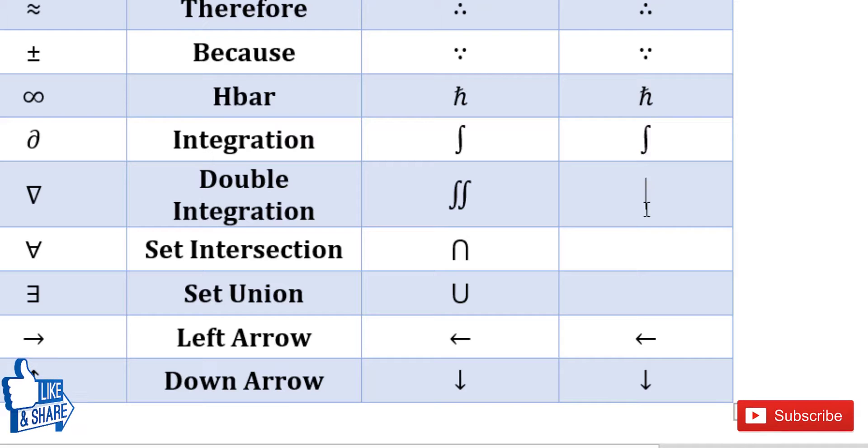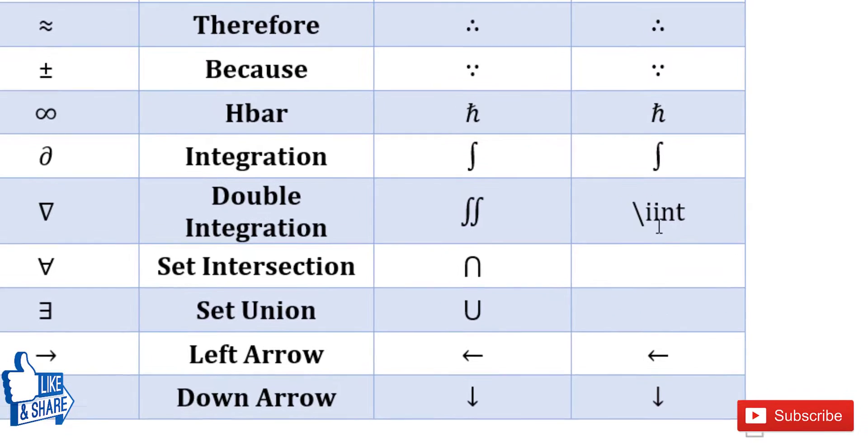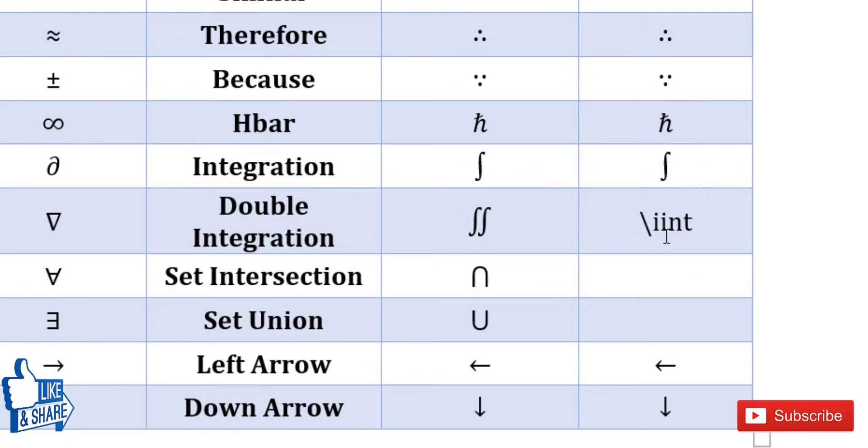So this is for single integration. For double integration, it is like iint. The number of i's stands for the number of integrations. Like for single integration, it is just one i. For double integration, iint. For triple integration also, it is iiint.